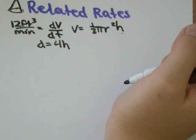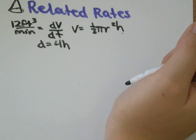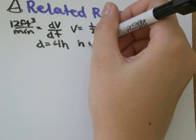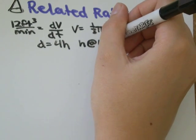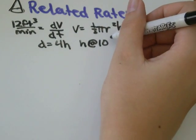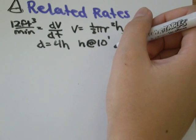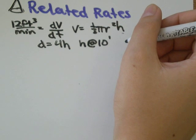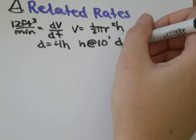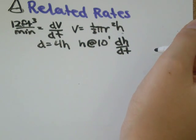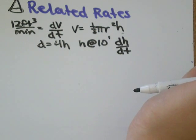At what rate is the height of the pile changing when the pile is ten feet high? So at height, the height when it's at ten feet high is what we're trying to figure out what's the rate when height's ten feet high. So the rate of the height with respect to time would be dh over dt at h equals ten feet.